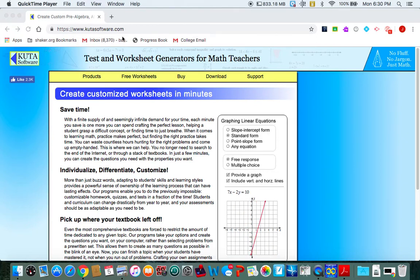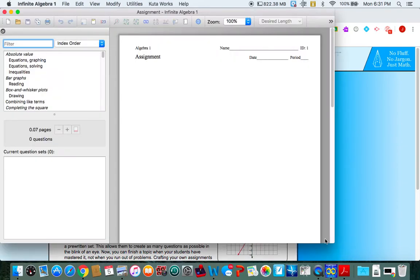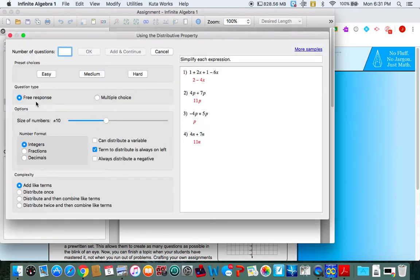Okay, I'm going to be showing you how to use Kuta software, the Algebra 1 program. Now, say I want to create a sheet on combining like terms. I click combining like terms and I want four multiple choice questions. I click four.